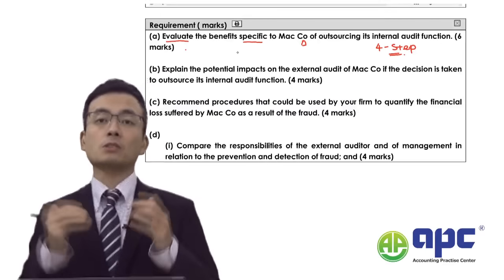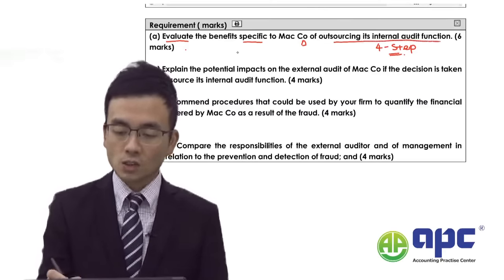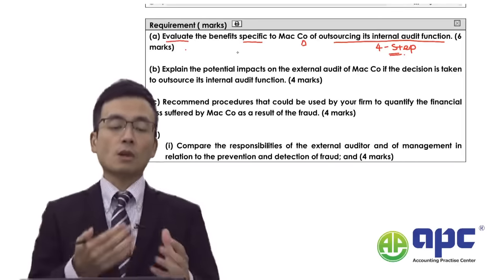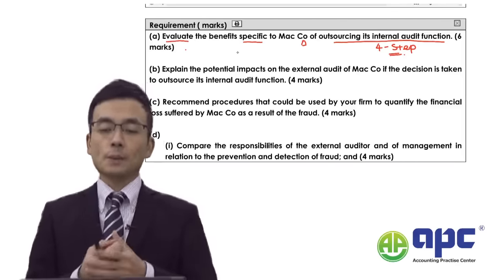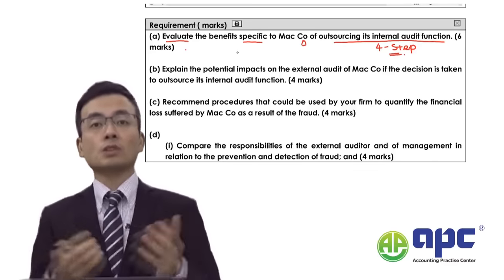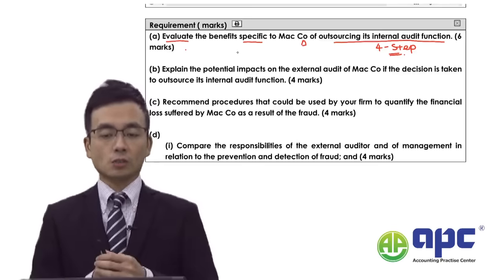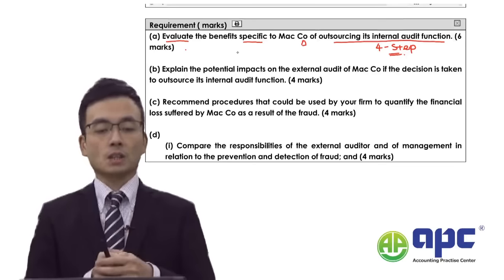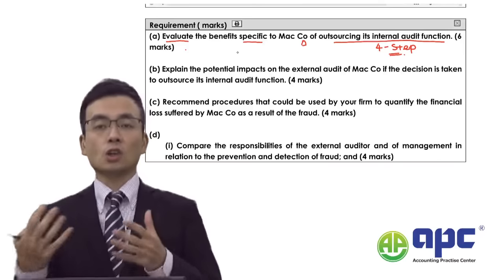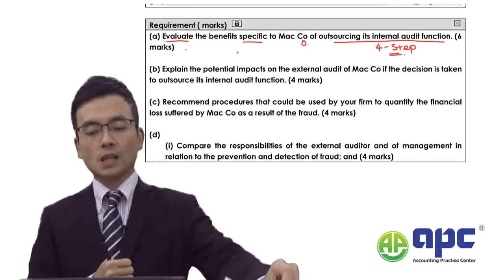The client's company decides to outsource the internal audit function to a service organization. Students may refer to different ISAs when answering Part A - for example, ISA 610 on using the work of internal auditors, or alternatively ISA 402 on service organizations. You can also use a common sense approach: when the client outsources the internal audit function, the control environment, procedures, and internal controls will change.